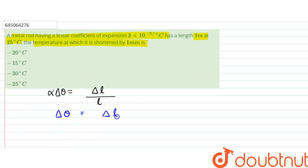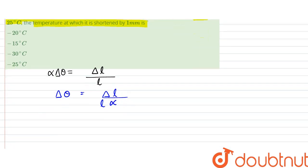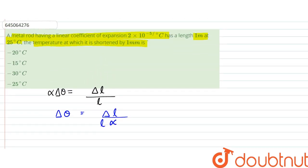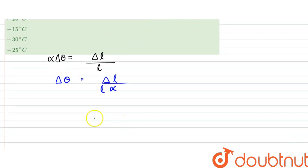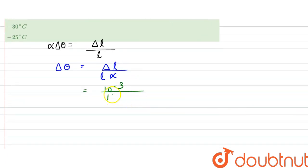So from here when we substitute ∆l to be 1 millimeter, it is 10⁻³ divided by 1 meter into α, which is 2 × 10⁻⁵. So it would be 100 divided by 2, which is equal to 50 degrees Celsius.